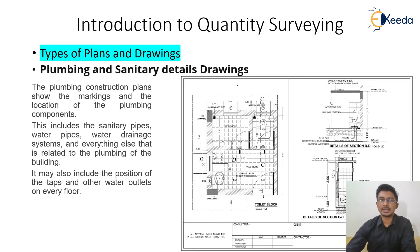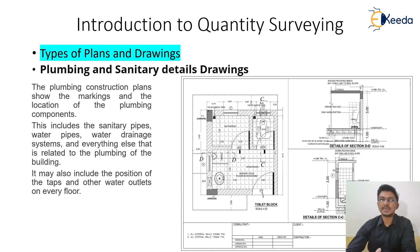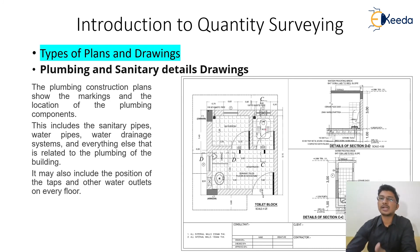Next are the plumbing and sanitary detail drawings. These explain where water enters the house, how water from a rooftop storage tank is distributed, and how washrooms and toilets are arranged — their sections, internal fixtures, and layout. From this drawing we come to know the dimensions of everything, how they are arranged, and how much quantity of each item is needed.